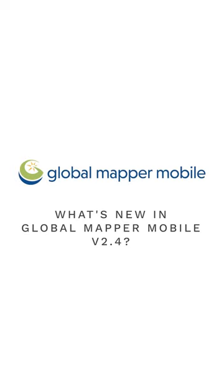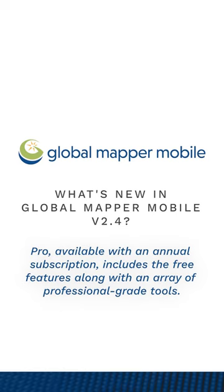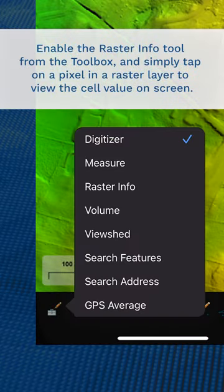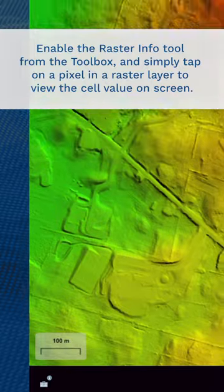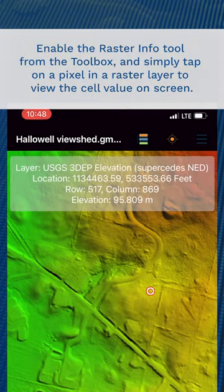GlobalMapper Mobile version 2.4 is now available for download with exciting new free and pro features. The Raster Info tool allows you to click on a raster pixel to see its value, such as elevation or RGB values.